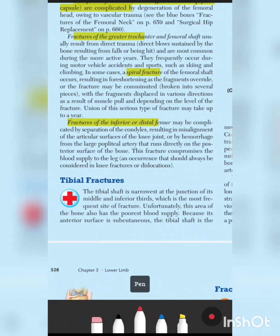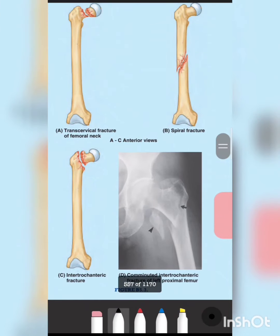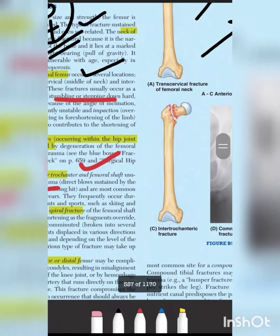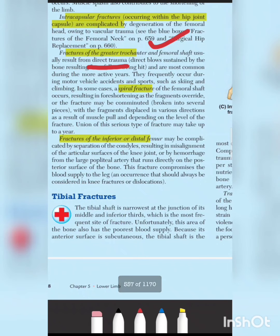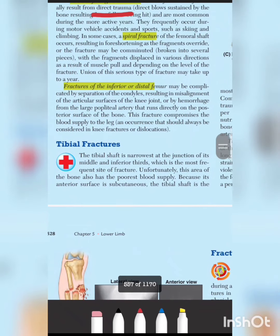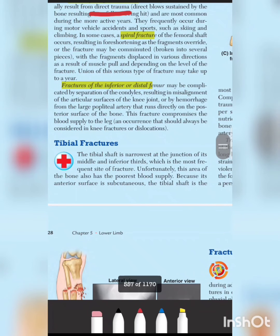Direct trauma to the femur can produce spiral fractures with fragment overrides and bone shortening. We also have tibial fractures (TBL fractures). Distal femur fractures are also discussed, where the condyles may separate as a complication.